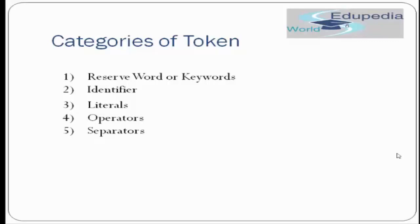For example, integer literal is 100, boolean literal is true or false, decimal literal is 11.5, and character literal is 'a' or 'd'. Then we have operators, which have multiple categories like arithmetic operator, assignment operator, logical operator, and so on. Simple examples are plus, minus, divide, less than, greater than, not equals to. Then we have separators. These are the five basic categories of Java tokens.